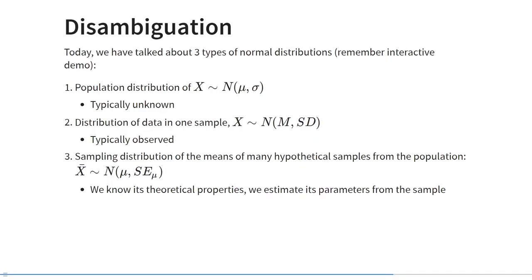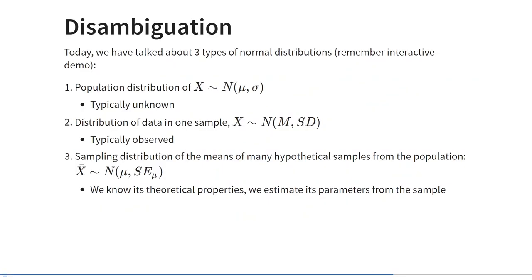The second use of the normal distribution is to describe the distribution of data in a sample. This distribution has mean m and standard deviation s or sd, and this distribution is typically observed. A third use of the normal distribution is as a sampling distribution — it describes the distribution of many statistics calculated in hypothetical samples from the population. This distribution also has mean mu and its standard deviation is the standard error.